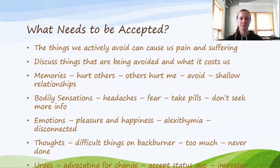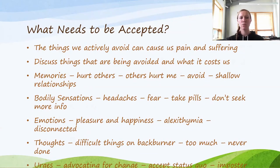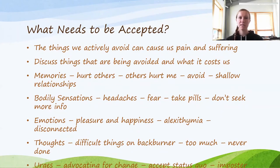The next activity within this objective is to really describe, think about, and talk about the things that we actively avoid and the pain and suffering that it causes — and to be able to fluently and thoroughly discuss those things and what they have cost us in the long run. The areas we'll look at are: the memories that you avoid, the bodily sensations that you avoid, the emotions that you avoid, the thoughts, and the urges.